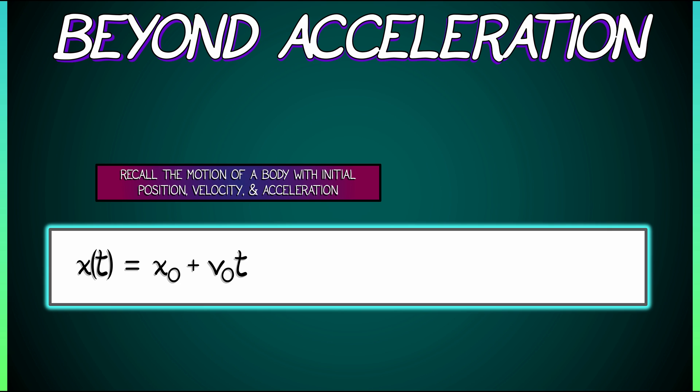is x naught, initial position, plus v naught times t, initial velocity times time, plus 1 over 2 factorial, a naught times t squared, where that a naught is the initial acceleration. Okay, great.